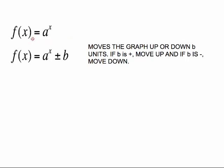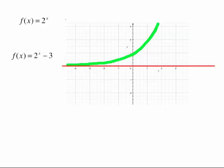Basic idea. If you have an original function of a to the x and you want to look at a to the x plus or minus b, here's the rule. If b is positive, then that graph is going to be moved up b units. If b is negative, you're going to move it down b units.